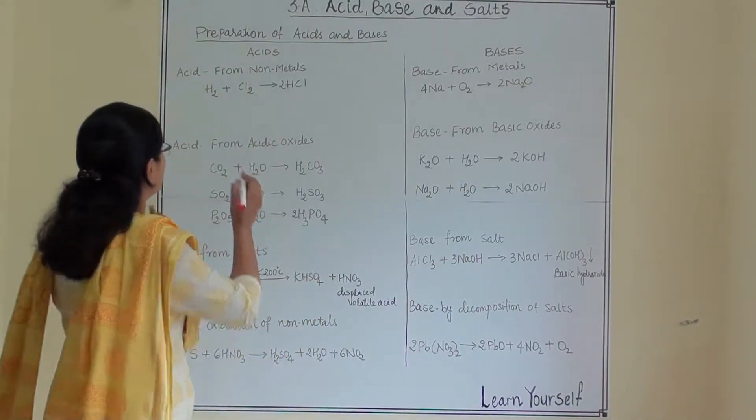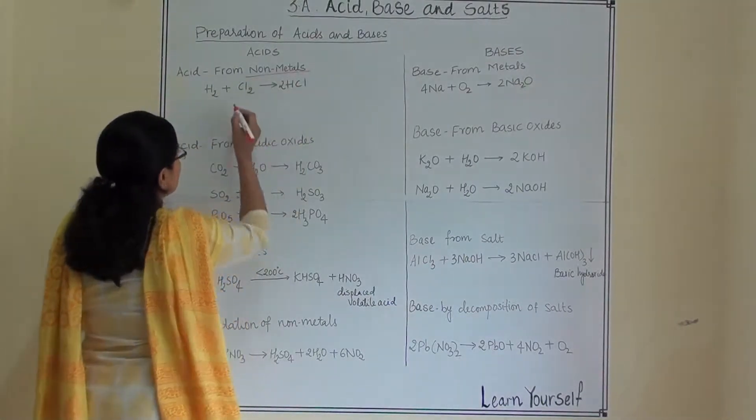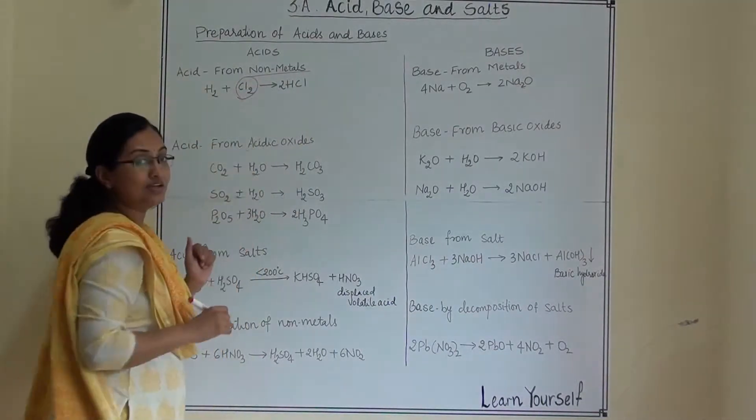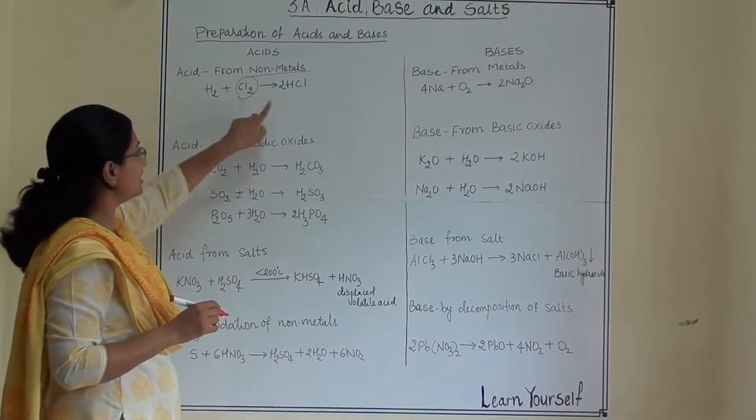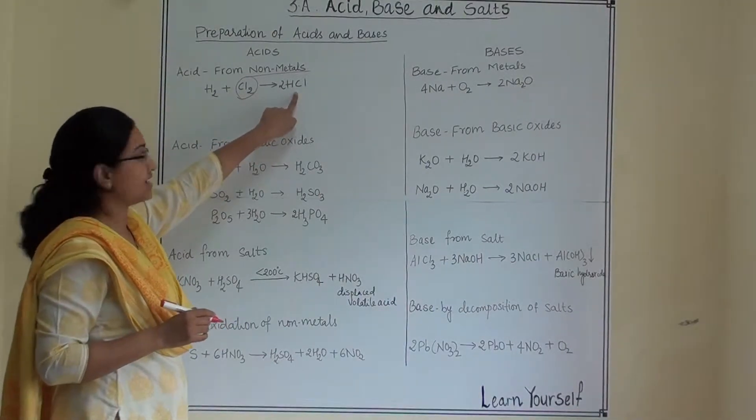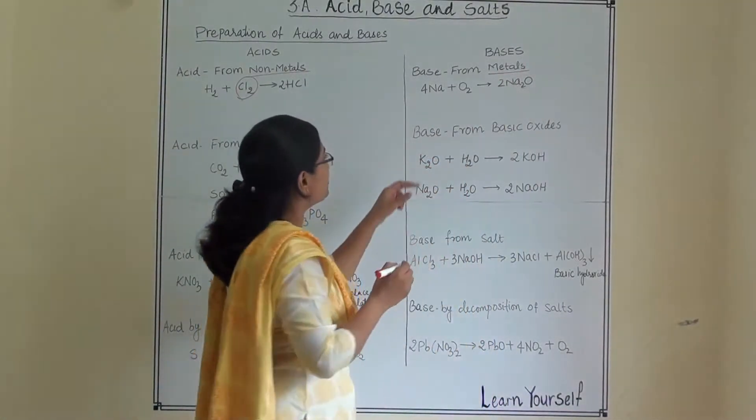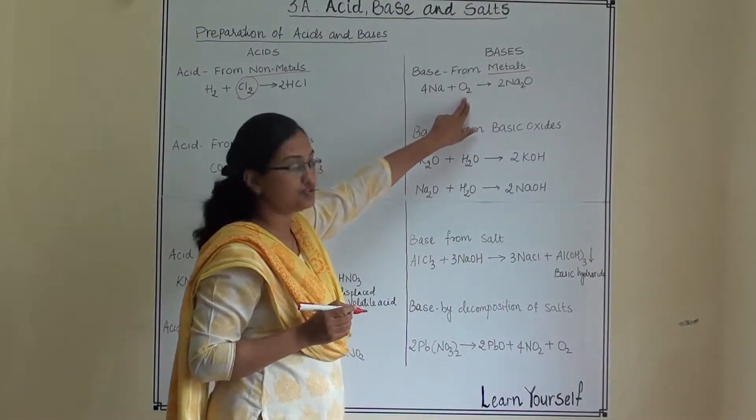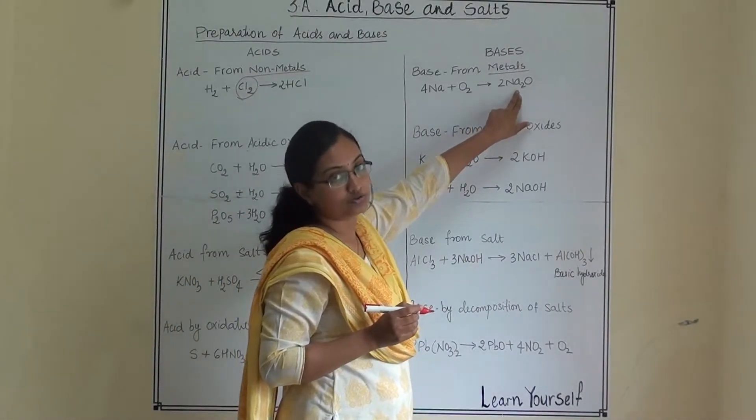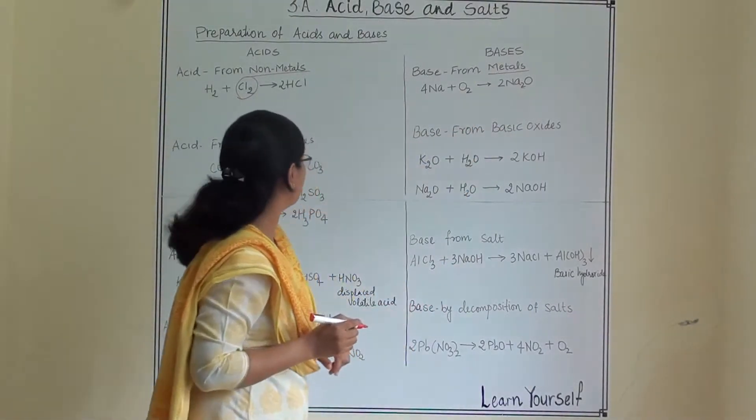So acid from non-metals, chlorine is non-metal. When it reacts with hydrogen it gives us hydrochloric acid. Metal it reacts with oxygen and it gives us sodium oxide and they are basic in nature.